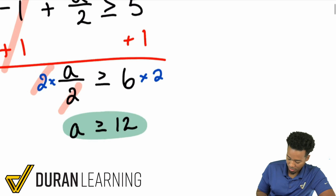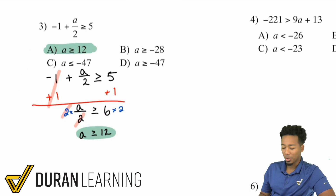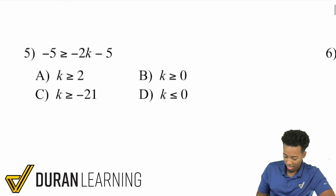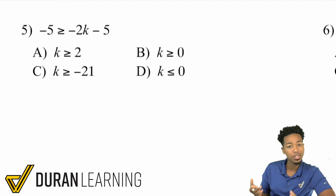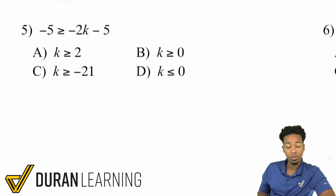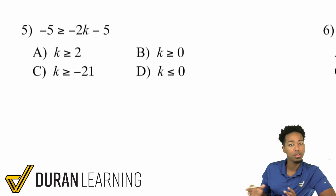And there it is — that's the answer. I'm going to go over a few more, my party people. Let's take a look at number 5. I like this one because there is a negative involved. We have negative 5 is greater than or equal to negative 2k minus 5. There are a few different ways we can handle this, and I'm going to show you all of them — maybe two or three ways to solve this.